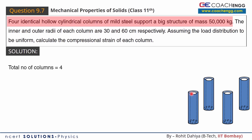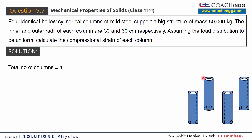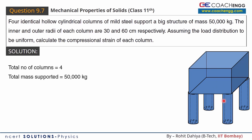The outer radius and inner radius are shown in the diagram. These four columns have a big 50,000 kg structure resting on them, and the columns are further resting on the ground. We have four columns and the total mass supported is 50,000 kg, so the total force across all four columns will be 50,000 into 9.8 newtons.